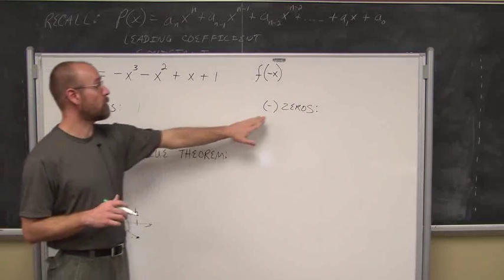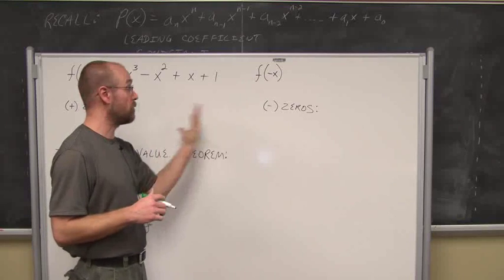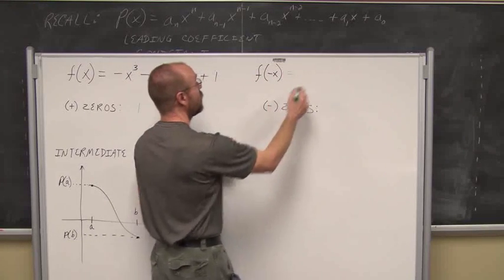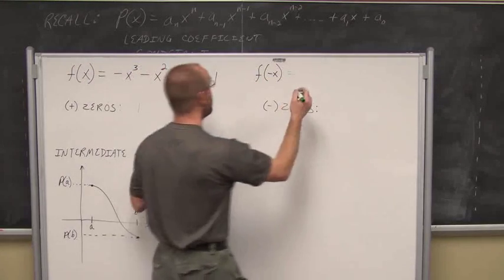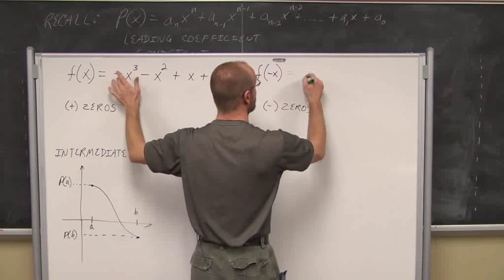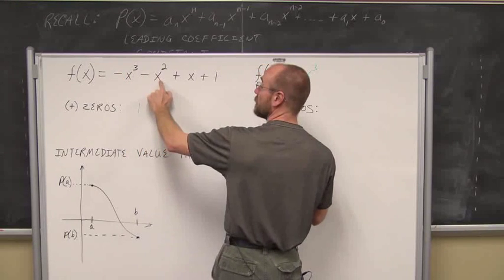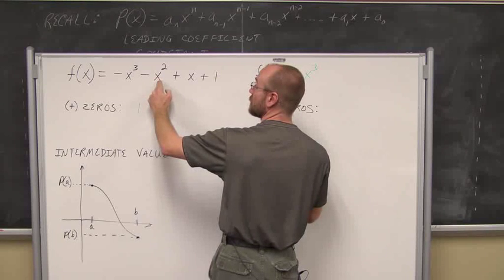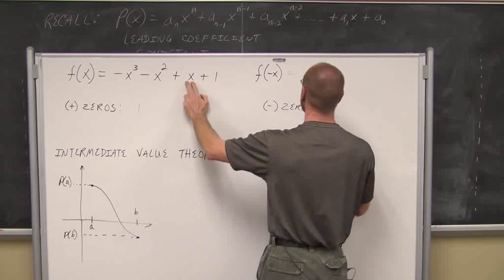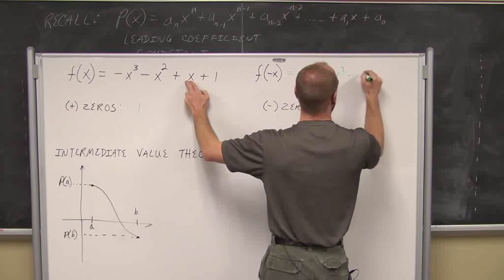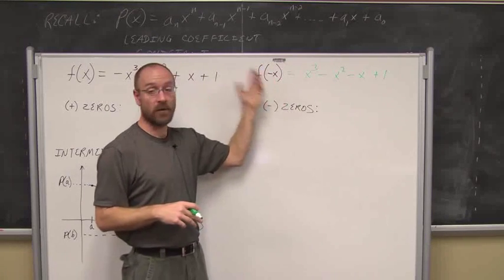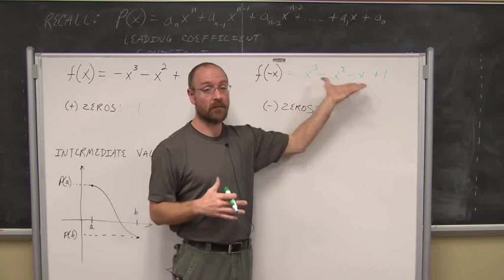What about the negative zeros — the values that might be zeros to the left of our y-axis? Essentially what we do is evaluate the function for a negative value of x, f(-x). If I put a negative value into the first term, a negative cubed changes the sign, so now it's positive x³. If I put a negative into x², squaring a negative doesn't change the sign — it'd be positive, so that coefficient stays negative. If I put a negative into the x term, it changes its sign to be negative. And the constant doesn't change.